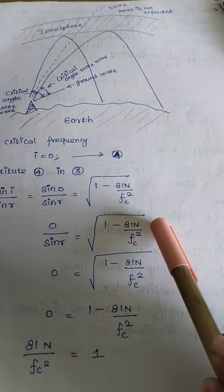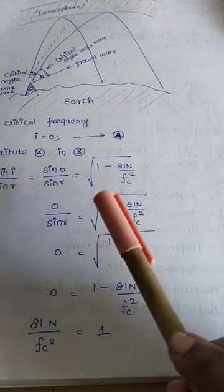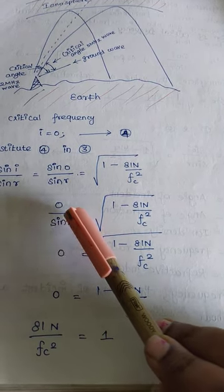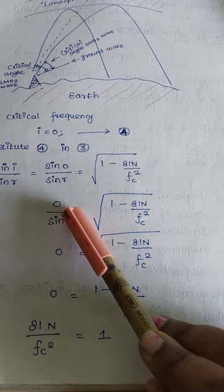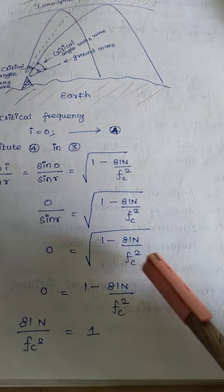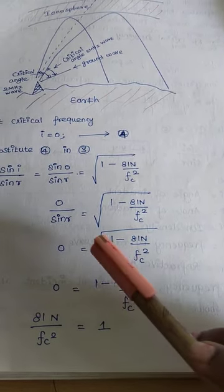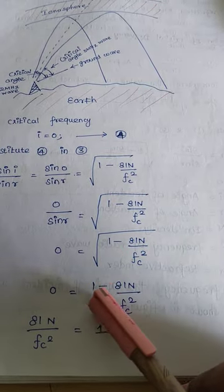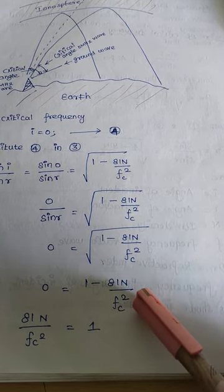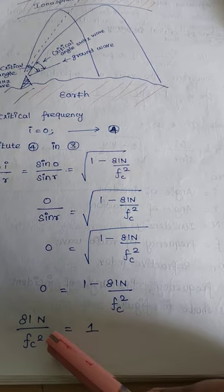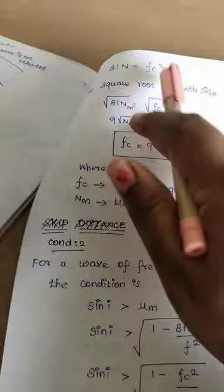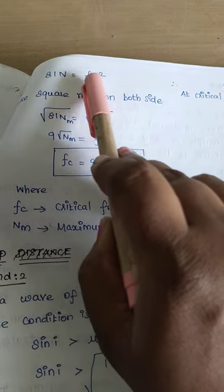Squaring both sides to remove the square root: 0 = 1 minus 81n / fc². Bringing the term to the left-hand side: 81n / fc² = 1. Cross-multiplying gives fc² = 81n.